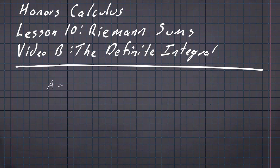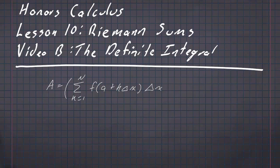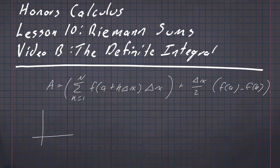The area underneath a curve is given by the sum k going from 1 to n of f of a plus k delta x times delta x, plus delta x over 2 times f of a minus f of b. This calculates the area given an arbitrary curve between points a and b. And delta x we defined as b minus a over n.